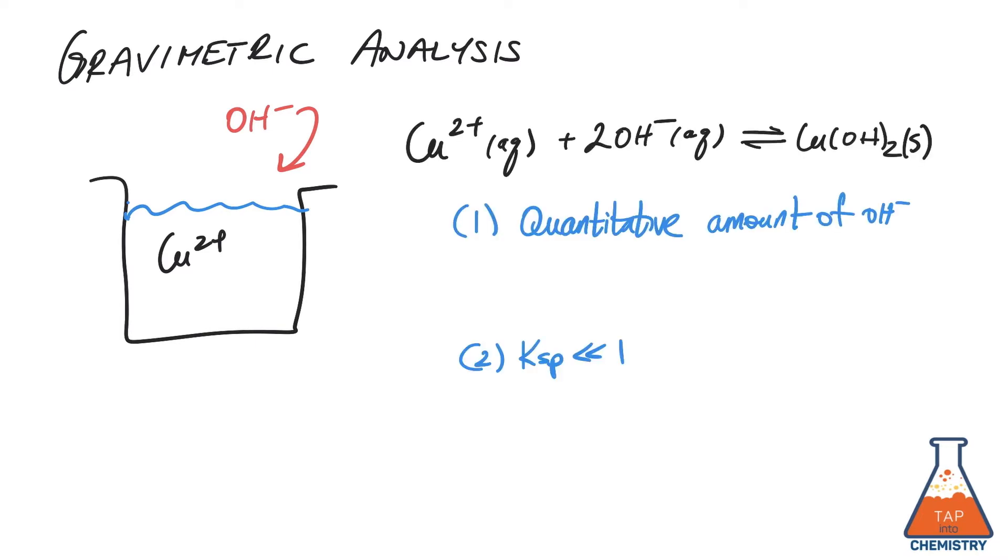In order to ensure that all the copper ions precipitate out of solution, two conditions must be met. One, we need to make sure that the hydroxide ion is added quantitatively, meaning that the number of moles of hydroxide ion is at least equal to the number of moles of copper ion, if not greater.